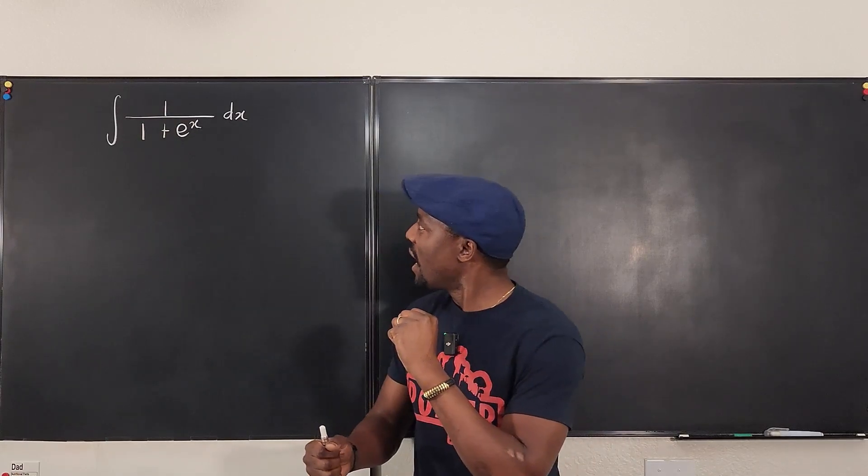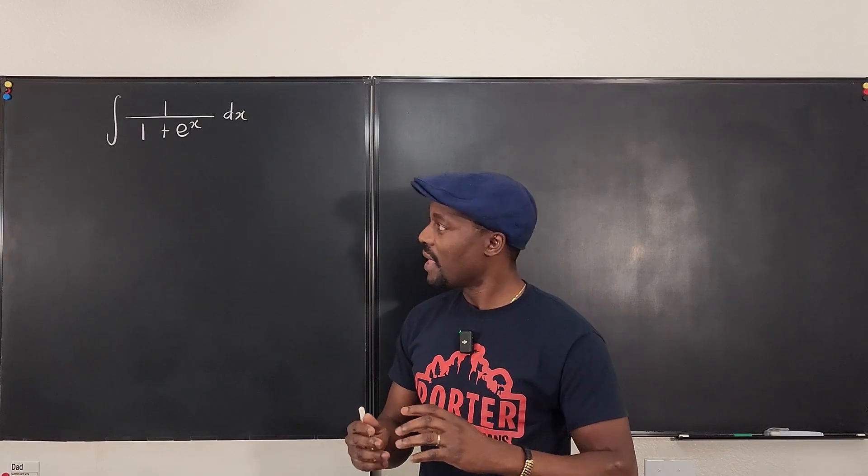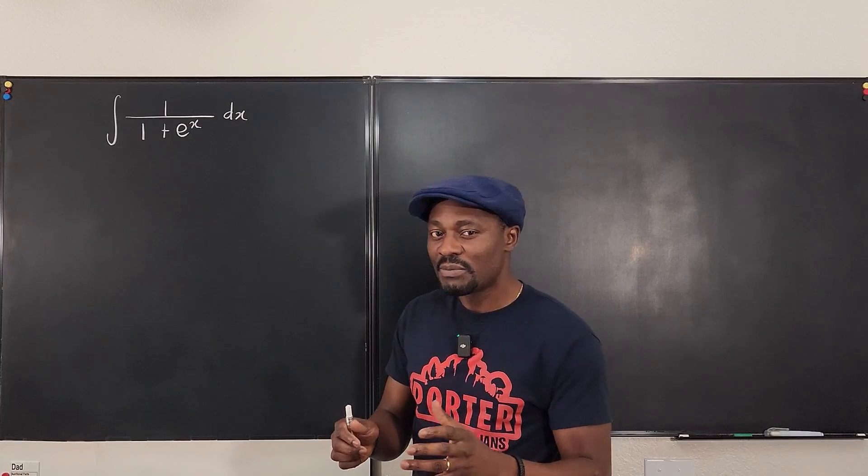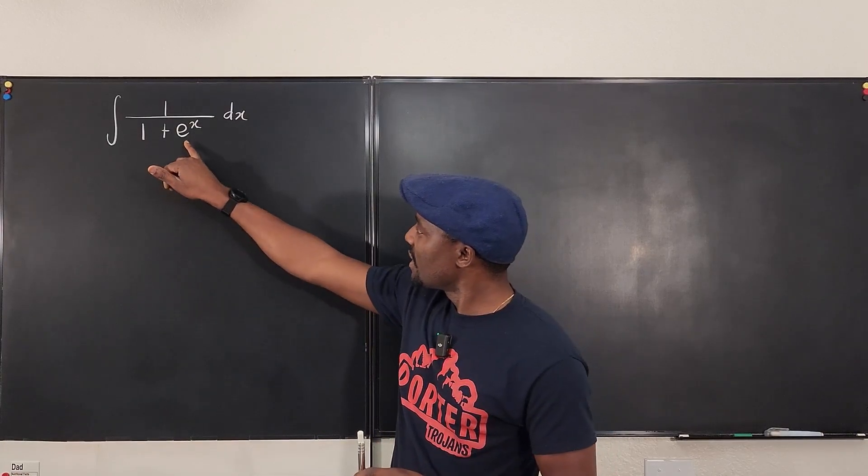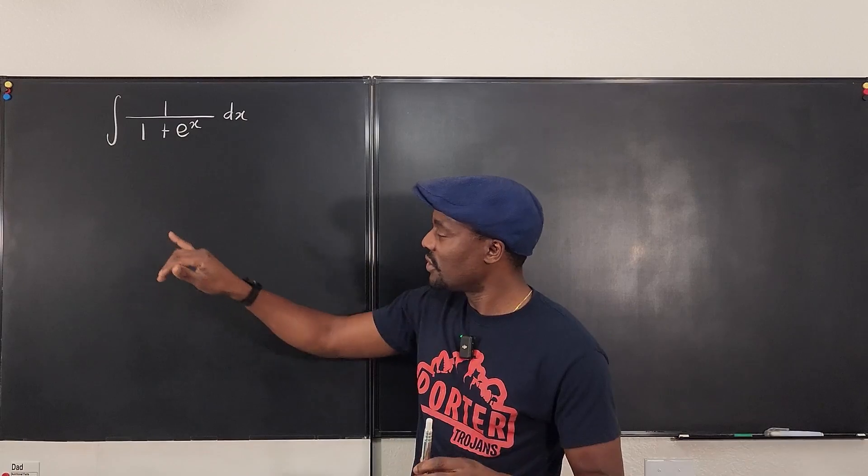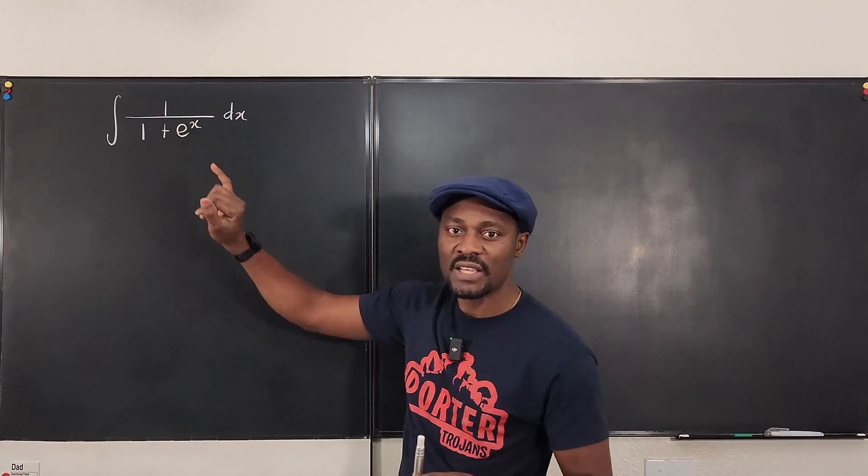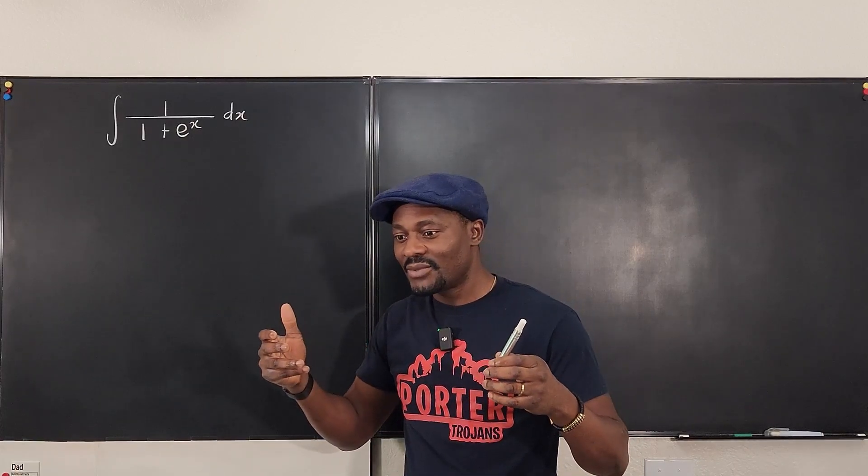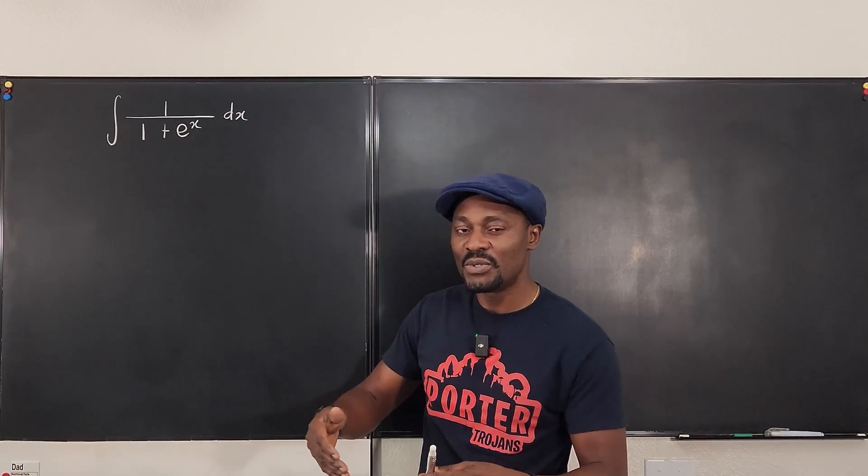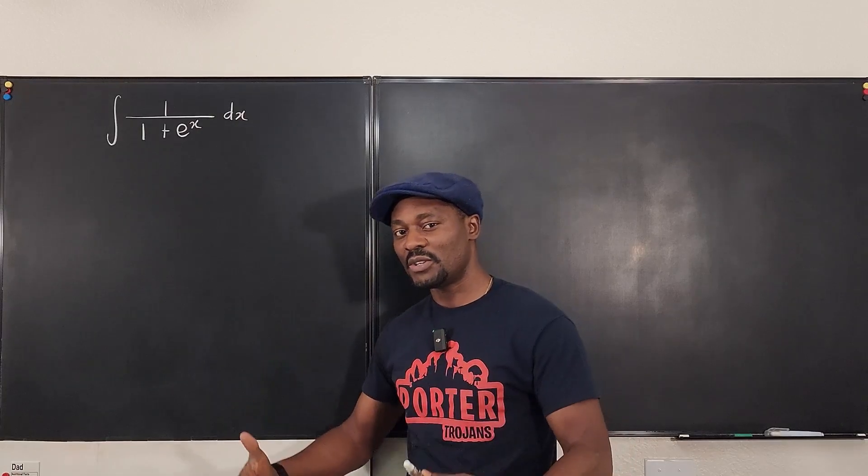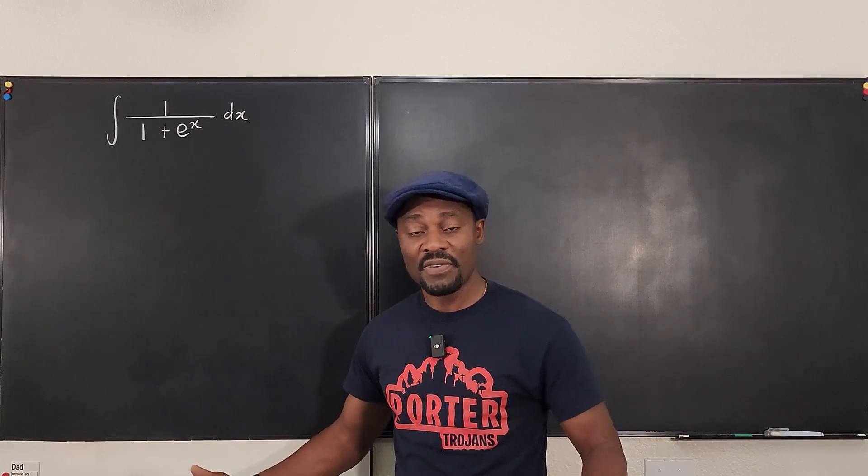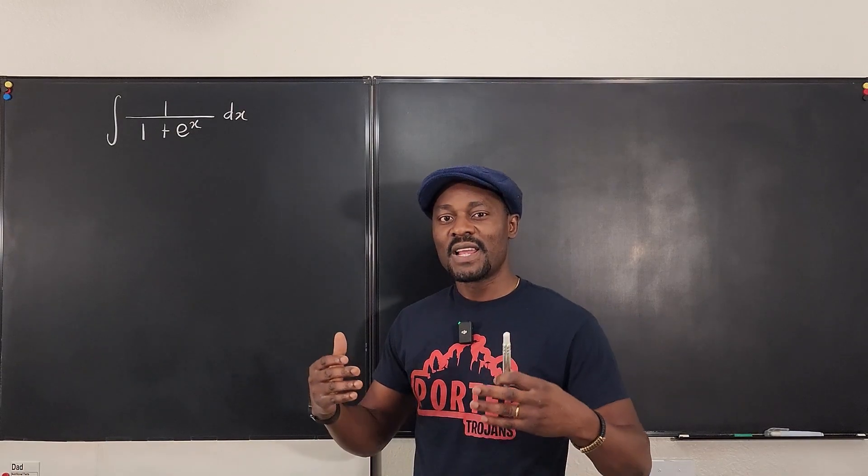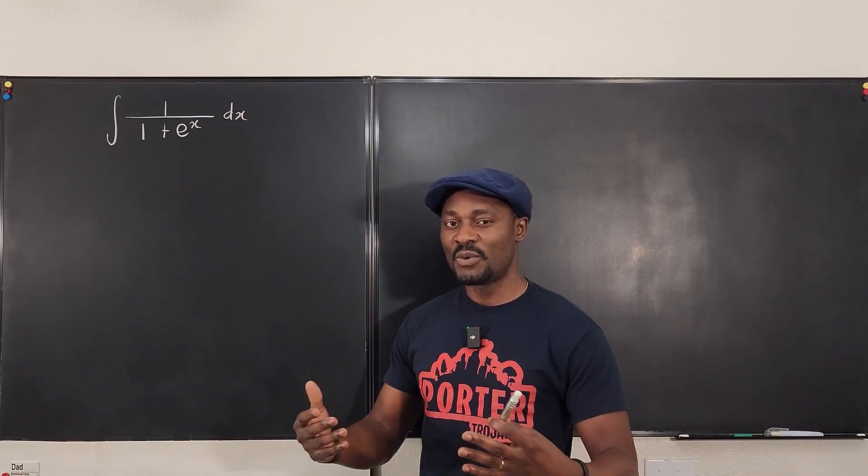So I really didn't know what to do. My first u that I did the substitution for was a bit complicated. So I narrowed it down to, let me just make e to the x my u. What I noticed was that I got something that required the use of integration by partial fraction decomposition. I eventually got the answer. But I was just wondering if there was another way.